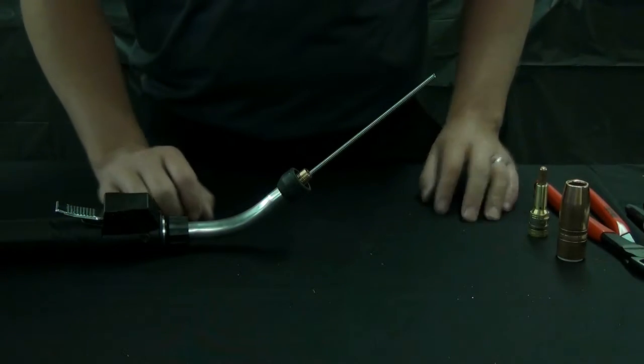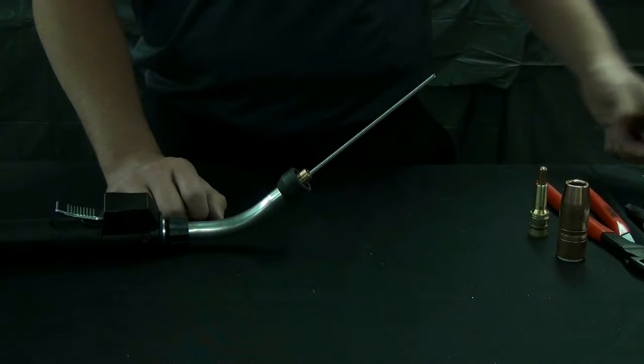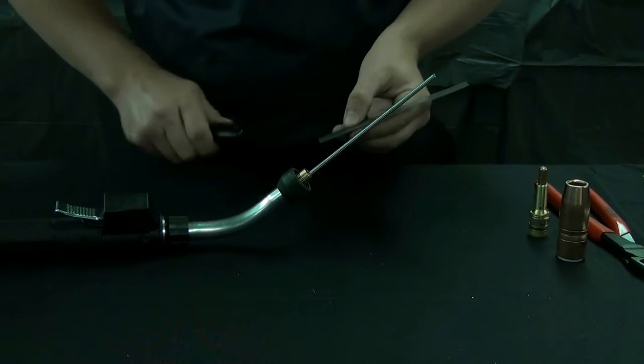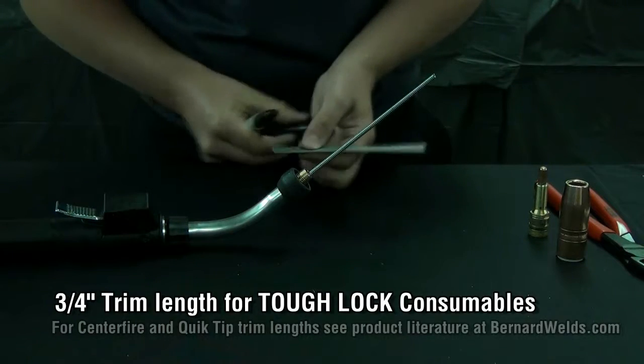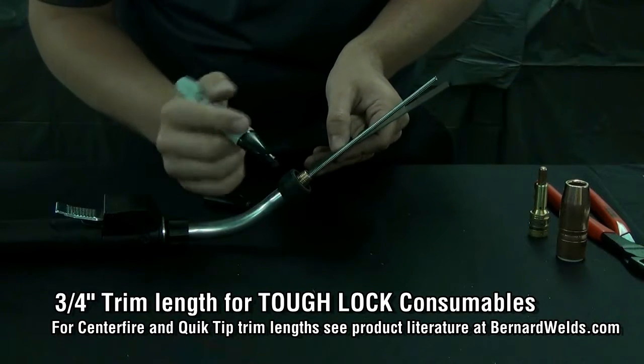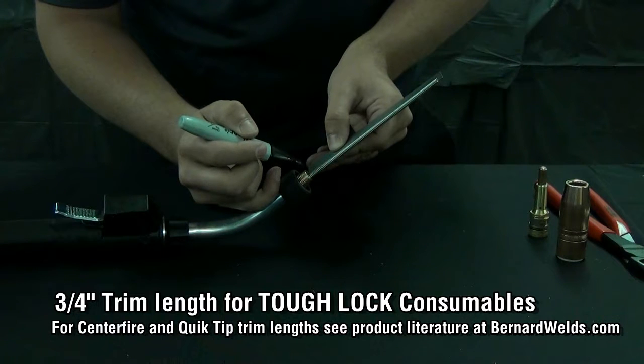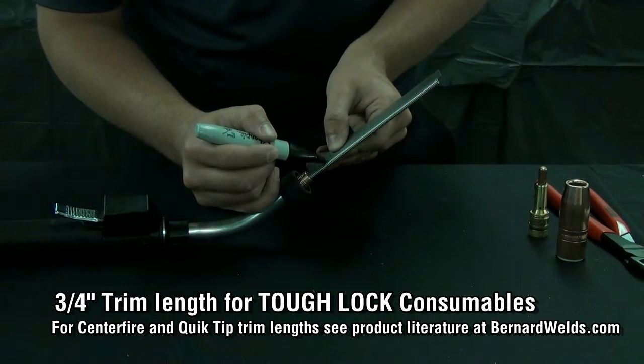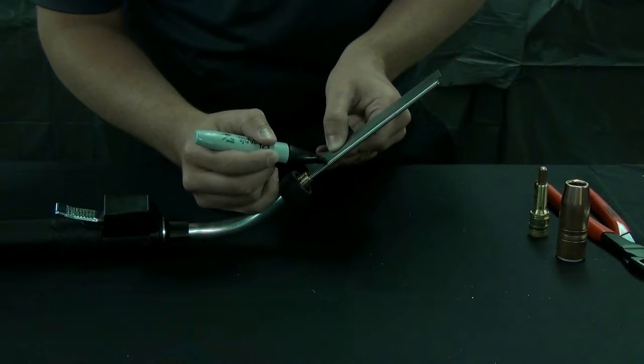With the gun straight with no bends in the cable, take a measuring stick and measure three quarters of an inch from the end of the neck to three quarters of an inch on the liner. Mark it with a black marker.